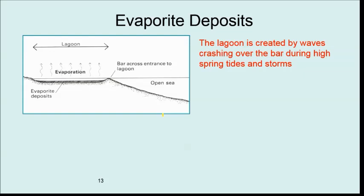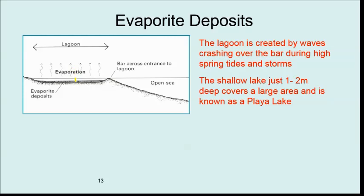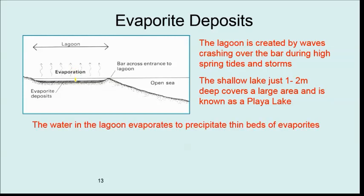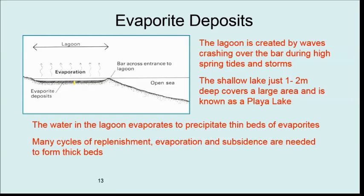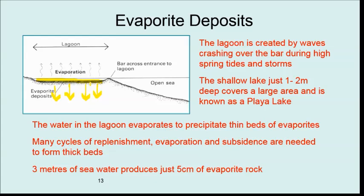Here's the lagoon itself — the playa lake — which is often very shallow. You get evaporite deposits building up through many cycles of replenishment, evaporation, and subsidence. These layers get so thick that the whole area subsides under the weight of evaporites. As it subsides, it allows more water in on top, and so extra layers are deposited above the original salt layer. Just three metres of sea water produces five centimetres of evaporite rock.